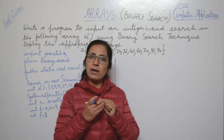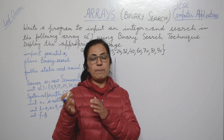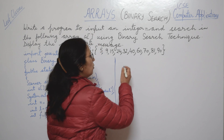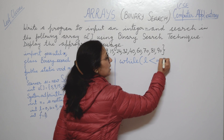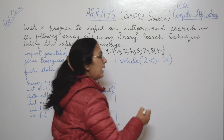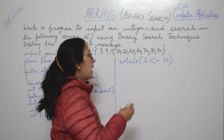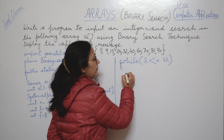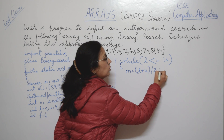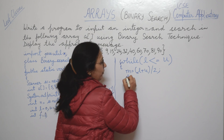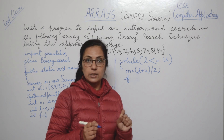We use a while loop: while l is less than or equals to u, we continue the process. Inside the loop we first find the mid value: m = l + u / 2. Then we check whether the element at mid position A[m] is equal to the number N we want to search.